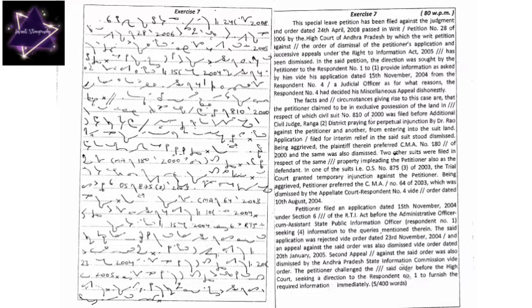This special leave petition has been filed against the judgment and order dated 24th April 2008 passed in writ petition number 28 of 2006 by the High Court of Andhra Pradesh, by which the writ petition against the order of dismissal of the petitioner's application and successive appeals under the Right to Information Act 2005 has been dismissed.